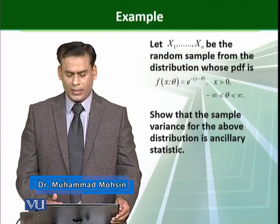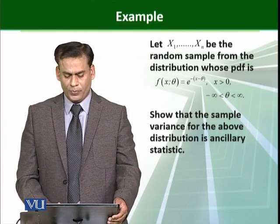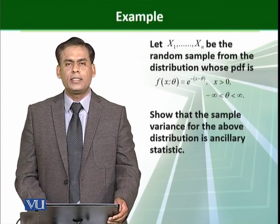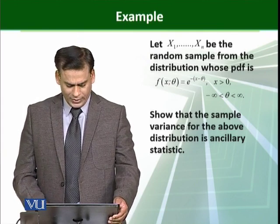Show that the sample variance for the above distribution is ancillary statistic. So we have to show that the sample variance actually is ancillary statistic for this probability density function. So how we proceed that?